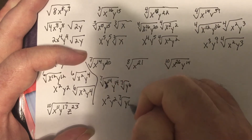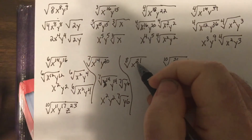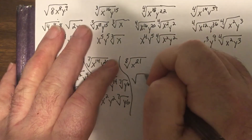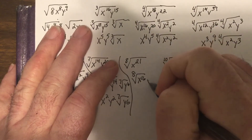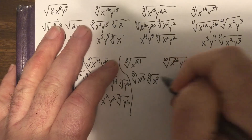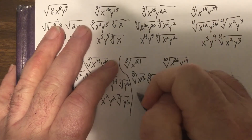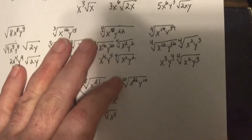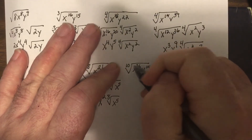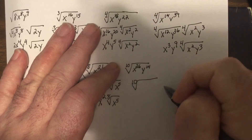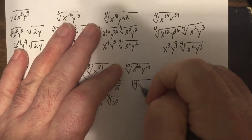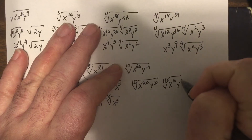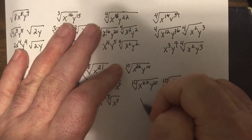For the 8th root of X to the 21st: 21 isn't divisible by 8, so we take X to the 16th, leaving X to the 5th. The result is X squared times the 8th root of X to the 5th. For the 10th root: powers must be divisible by 10. For X to the 21st Y to the 10th, we take X to the 20th — leaving X as remainder — and Y to the 10th. The result is X squared Y times the 10th root of the leftover.